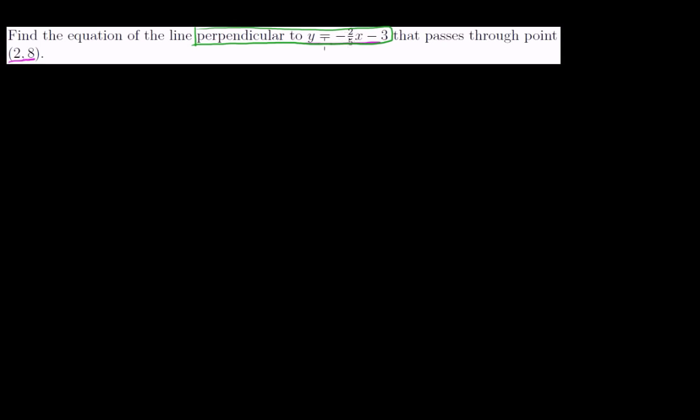So its slope, the negative inverse of 2/5, the inverse of 2/5 is 5... If this line's slope is negative 2/5, the equation of the line we have to figure out that's perpendicular, its slope is going to be the inverse. So instead of 2/5, it's going to be 5/2. Instead of being negative, it's going to be positive.